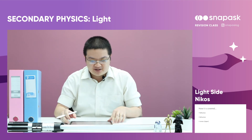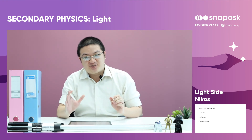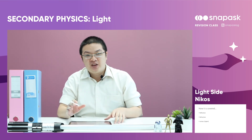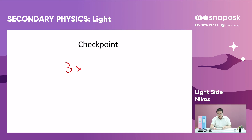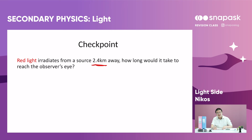On to the first checkpoint. All electromagnetic spectrum waves, including light, travel at the speed of 3 × 10⁸ meters per second. This is the speed of light as we know it. The question is: red light irradiates from a source 2.4 kilometers away. How long does it take to reach the observer's eye? Take 5 to 10 seconds to stop and think. This question is asking how long it takes for light to travel 2.4 kilometers.